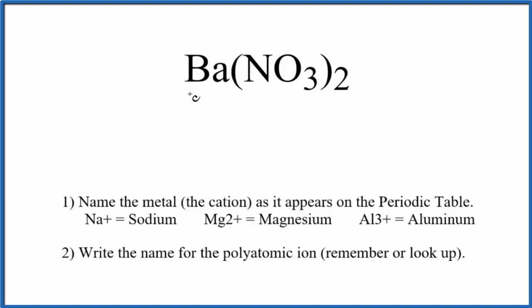So first we're gonna write the name of the metal, barium, as it appears on the periodic table. Next we're gonna write the name of the polyatomic ion. This is the nitrate ion. And it really doesn't matter that we have two. We just call this barium nitrate.